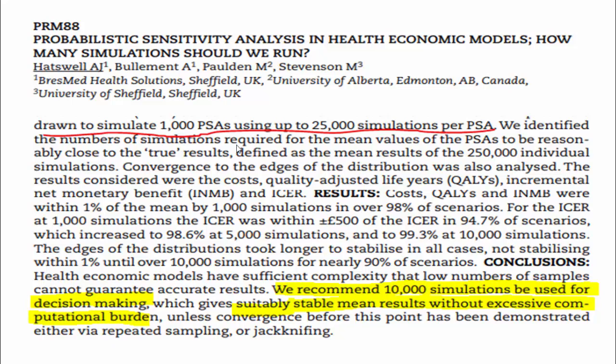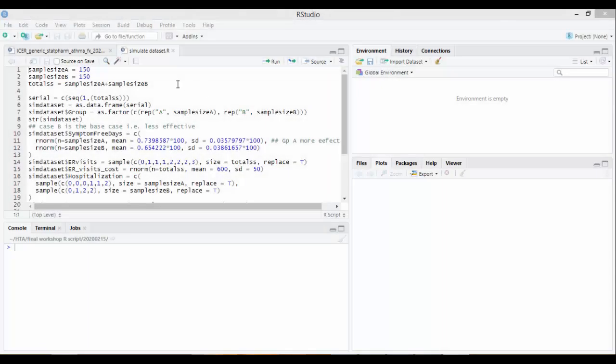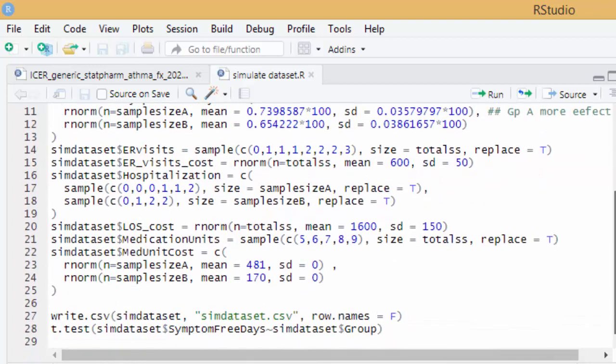So let's have a look at R. This script here is used to simulate the dataset for our study and you can put the sample size that you want for treatment A or treatment B. You can adjust the distributions or the parameters that you want to get your sample size and to get your simulated dataset.